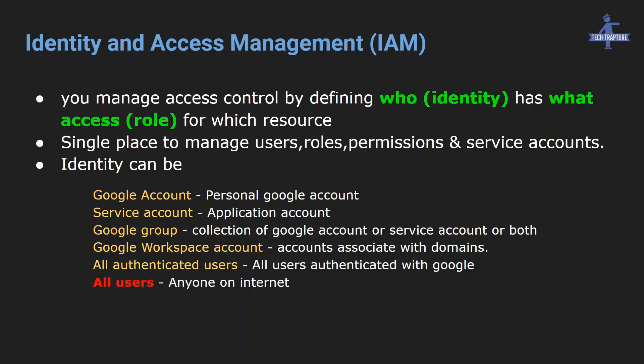The last identity type is all users, which identifies anyone on the internet. If you give access to all users, anyone from the internet can access your bucket. I've marked this in red because you should always avoid giving access to all users unless you are creating a publicly available web application, such as a static website with images you want to display publicly.